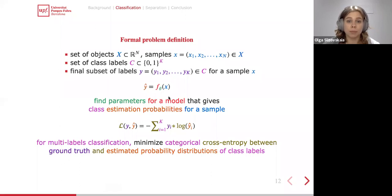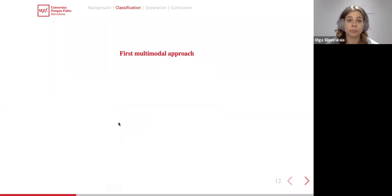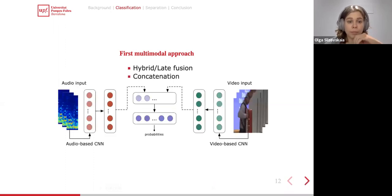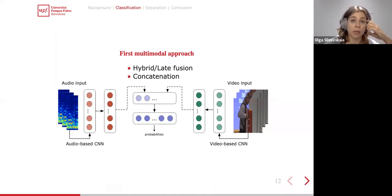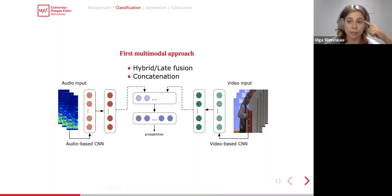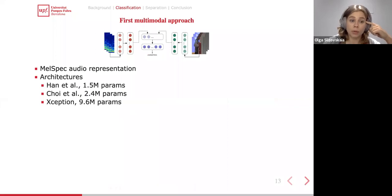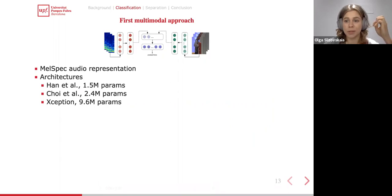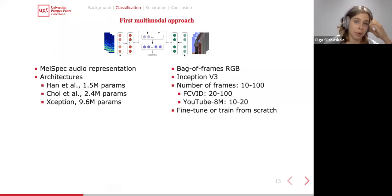Let me introduce the multimodal approach we use to solve this task. We make use of hybrid and late fusion with concatenation conditioning. Given audio input and video input in a frame-based approach, we experiment with different underlying representations for audio and visual frames, then concatenate them and jointly optimize to obtain class probabilities. For audio, we use mel spectrograms as input with several inception-like architectures of different sizes and regularization. For the visual model, we use a bag-of-frames approach processed with an Inception v3 architecture, experimenting with different numbers of frames depending on the dataset.